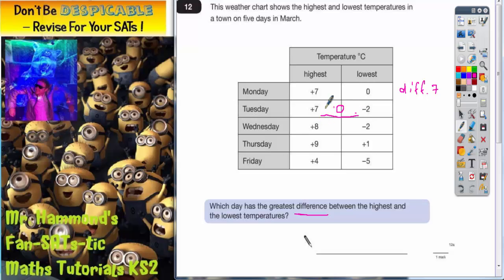So from zero to seven that's easy, that's just seven. And from zero to minus two that's just two. So put those together, seven and two would be nine, so that makes a difference of nine.